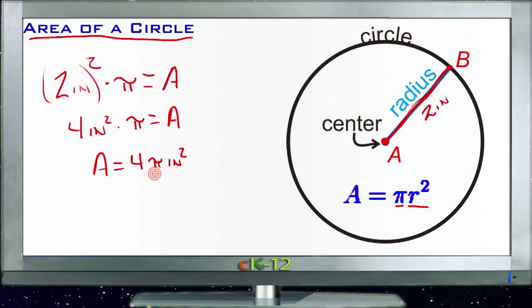You could estimate pi at about 3.1, so you'd have about 4 times 3.1 equals 12.4, or about 12.4 square inches as the area of that circle. So you can see the calculation's pretty easy—just figure out what your radius is.